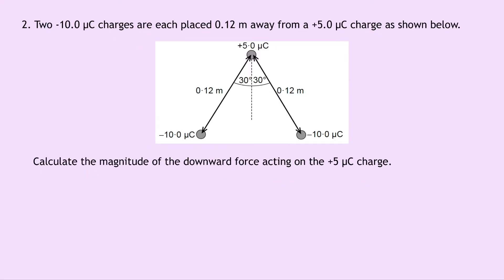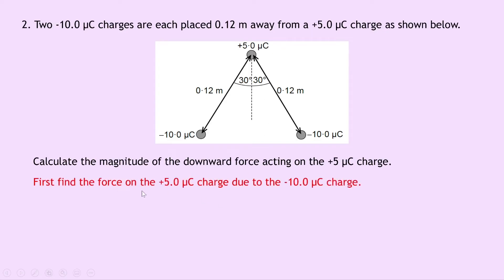Question two says that two minus 10 microcoulomb charges are each placed 0.12 metres away from a plus 5 microcoulomb charge as shown below. Calculate the magnitude of the downward force acting on the plus 5 microcoulomb charge. It's not going to be as easy as just using Coulomb's inverse square law, because we've got more than two charges — we've got three charges in total. Notice that we've got two identical charges of minus 10 microcoulombs, placed at an angle of 30 degrees away from the vertical, and a distance of 0.12 metres away from the plus 5 microcoulomb charge. What we need to do first is find the force on the plus 5 microcoulomb charge due to the minus 10 microcoulomb charge.